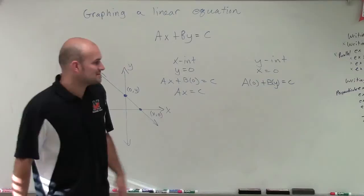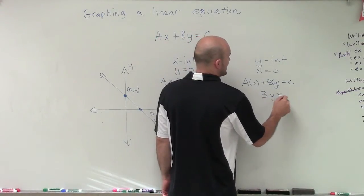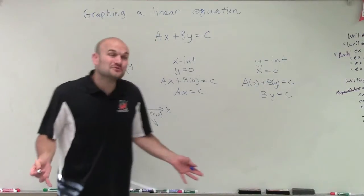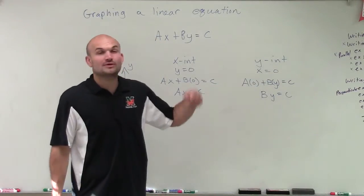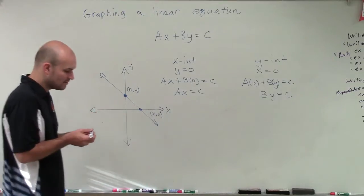So A times 0 plus By equals C. Therefore, I'll just have B times y equals C. Depending on what values I have for B, I'll be able to solve for the y-intercept. So that's solving by the x and y-intercept method.